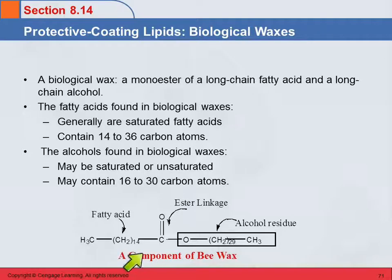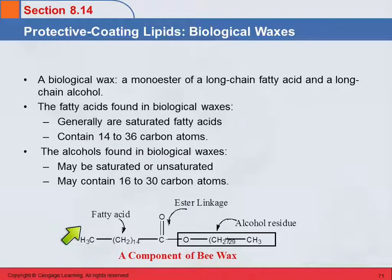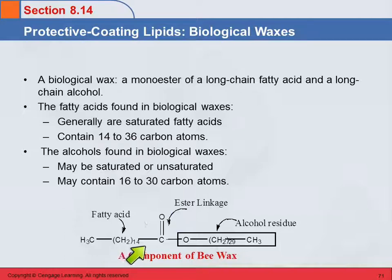If we look at this component of beeswax down here: this is an ester, and remember esters were formed from carboxylic acids and alcohols. So here we have a long-chain fatty acid, and over here we have a long-chain alcohol residue. Usually these fatty acids are saturated and they're 14 to 36 carbon atoms. The alcohols may be saturated or unsaturated, and they're going to be 16 to 30 carbon atoms.